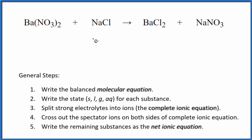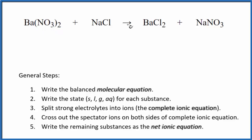In this video, we'll take a look at the equation Ba(NO₃)₂ plus NaCl — that's barium nitrate plus sodium chloride — and figure out whether a precipitate formed in this reaction. We'll look at the net ionic equation as a way to do that.